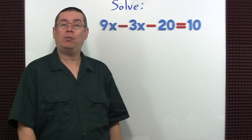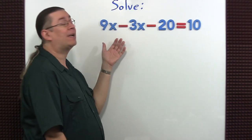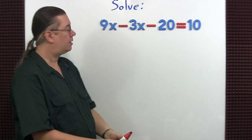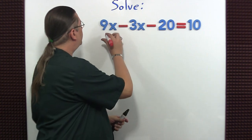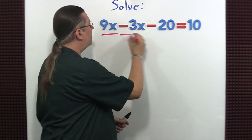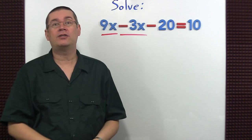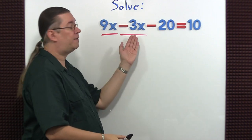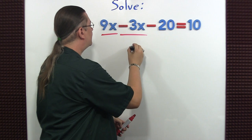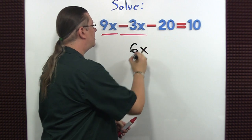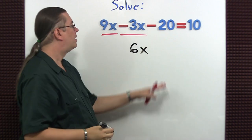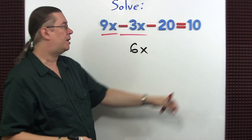For our first example, I would like to solve this equation by combining like terms. Well, our like terms are 9x and negative 3x. To combine, just subtract the coefficients. 9 minus 3 is 6, and then just write down the x. Go ahead now and copy the rest of the equation down.